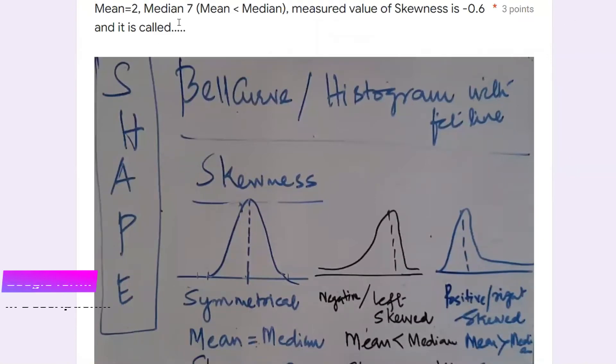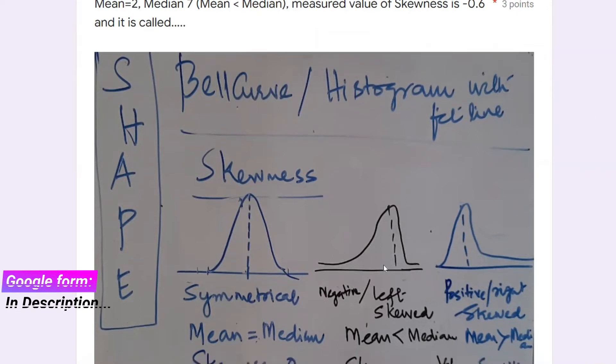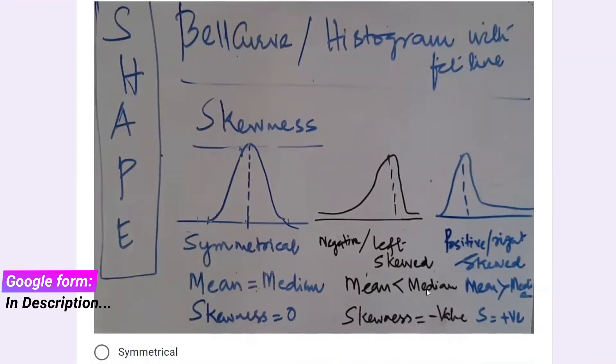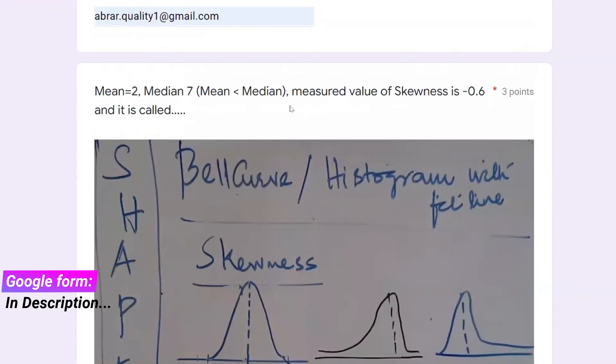The first question: mean equals 2, median equals 7. That means mean is smaller and median is higher, and the measured value of skewness is minus 0.6. What is it called? We know that if mean and median are equal, that's zero skewness and it's called perfectly symmetrical. If mean is lower and median is higher, like in this case, that means left skewed. We can say a negative value. The skewness value is negative, meaning left skewed, and positive skewed means a positive value.